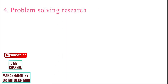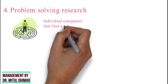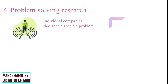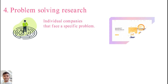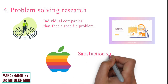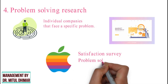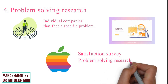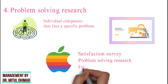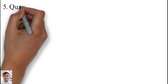Type 4: Problem solving research. This type of research is not carried out by many organizations but by individual companies that face a specific problem. Marketing research and market research are applied research used to solve problems. For example, Apple conducted a satisfaction survey on an international level. This type of research is considered problem solving research because the main purpose is to find a solution for a present practical problem.